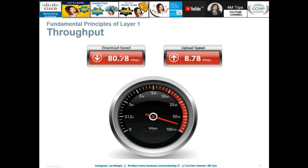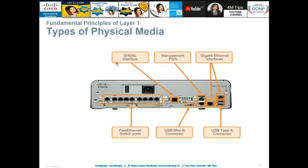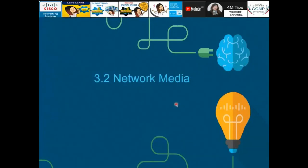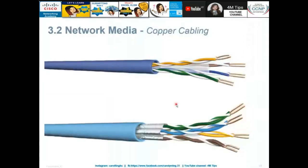Types of physical media include USB connectors such as Mini-B and USB Type-A. For network media, copper cabling uses pairs of wires that are twisted together. The reason they are twisted is that according to research, twisting reduces interference and noise.